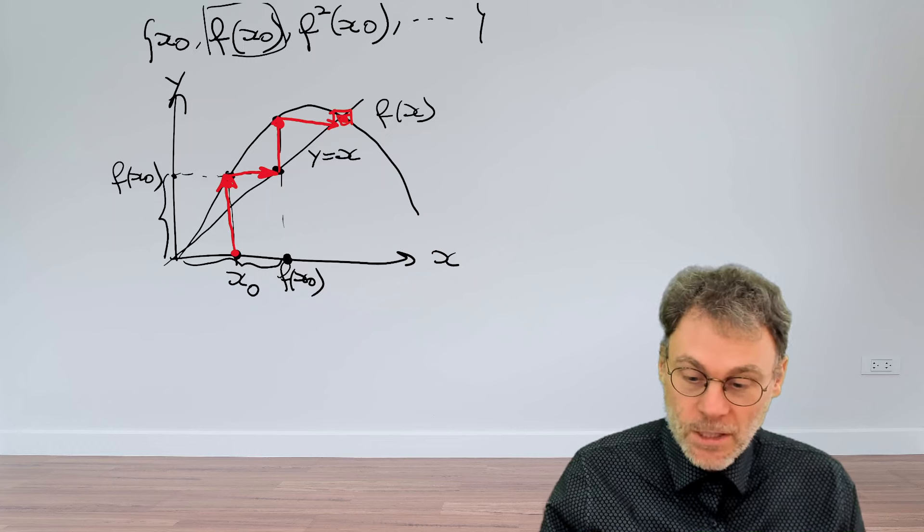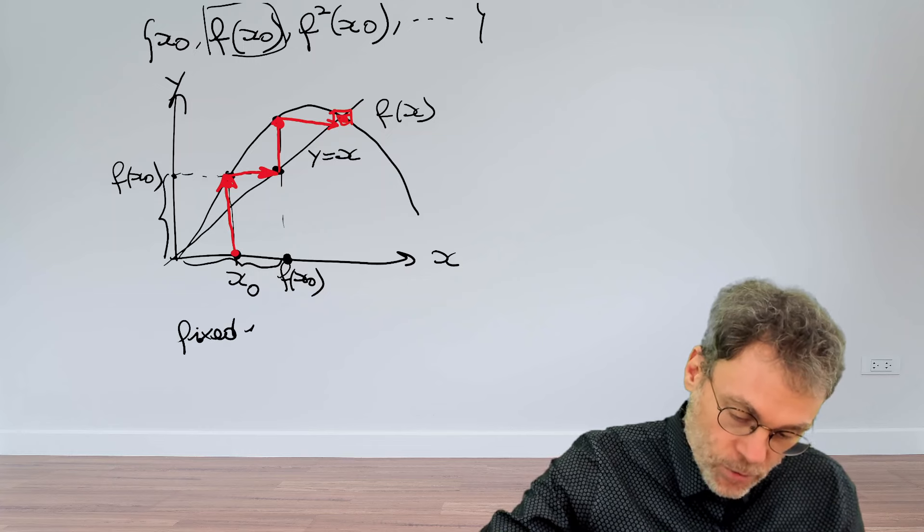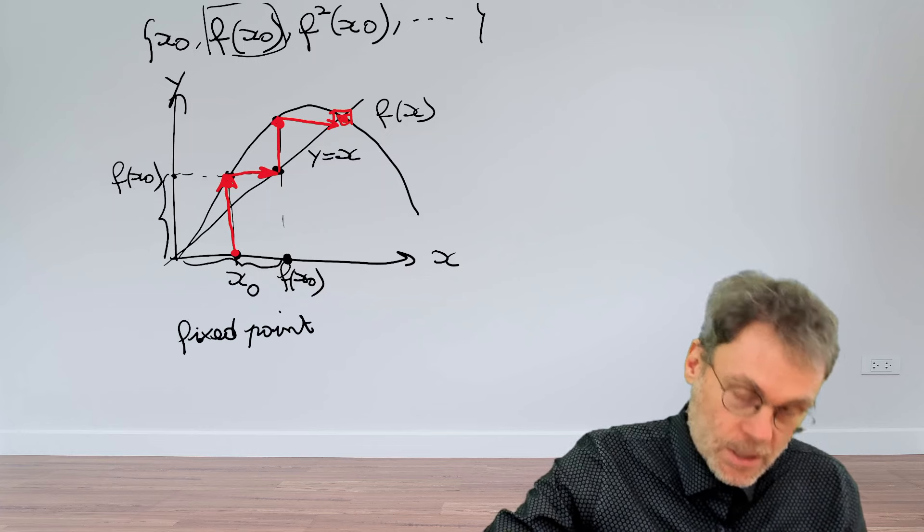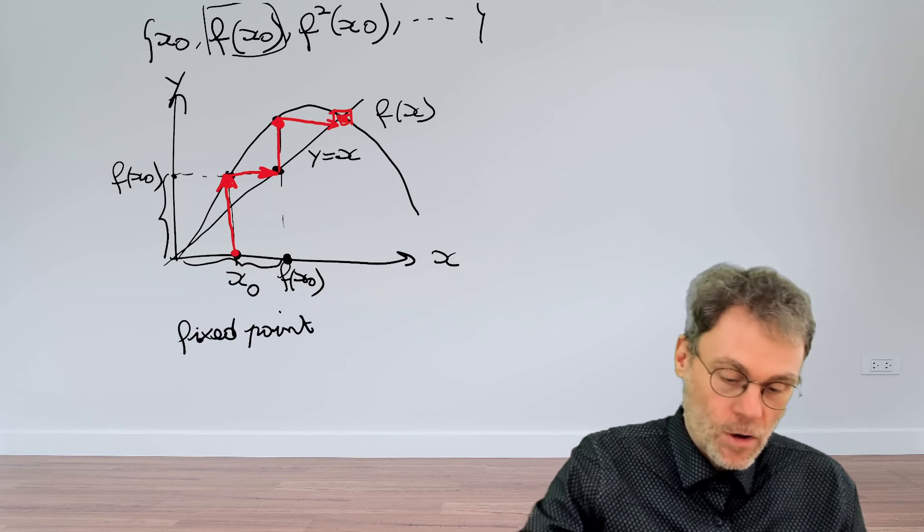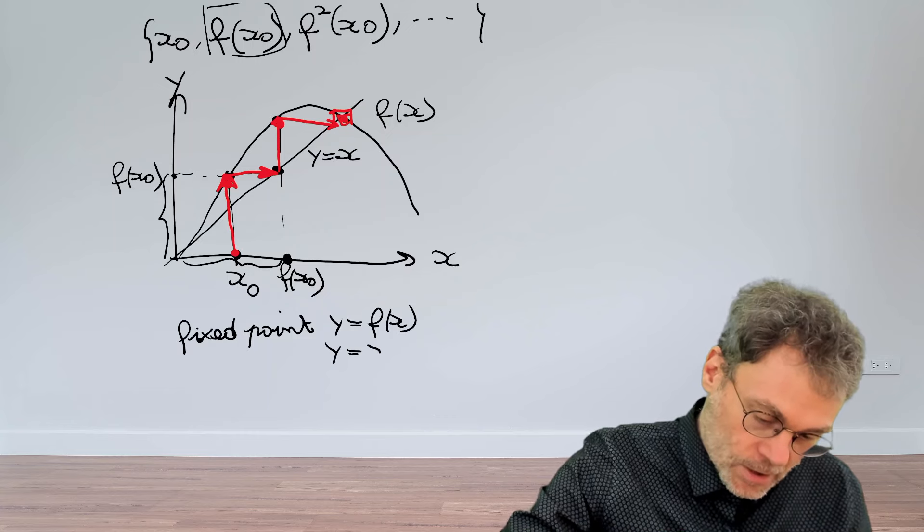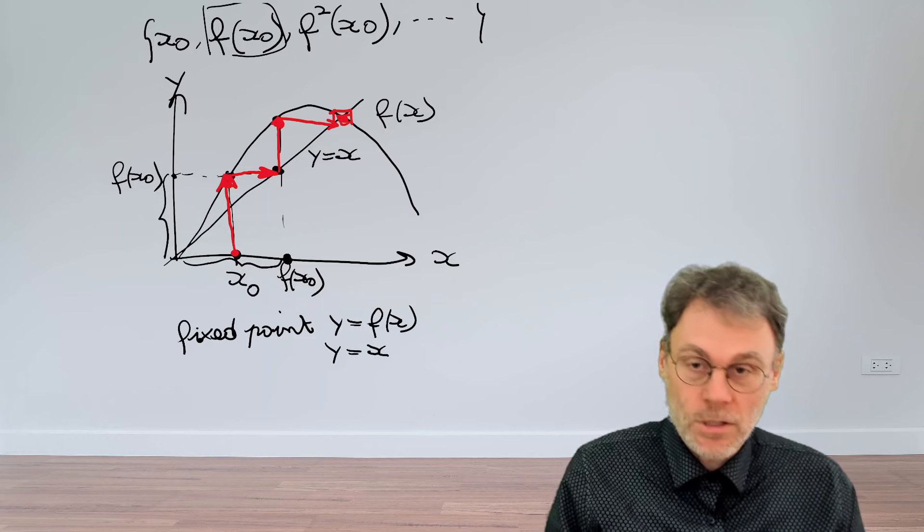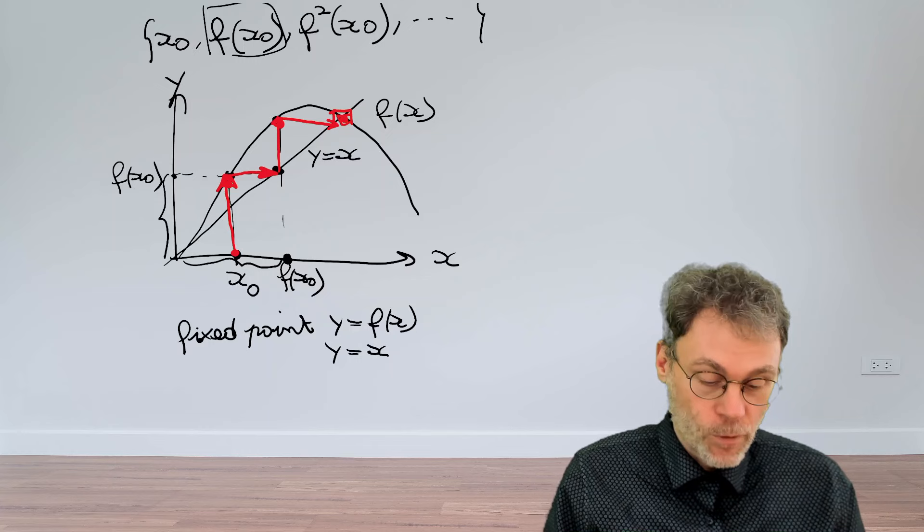And this is called a fixed point of the map. If you have a fixed point, it basically means that you have an intersection of y equal f of x and y equal to x, such that if you keep on applying the map, nothing changes. So that's why it's called a fixed point.